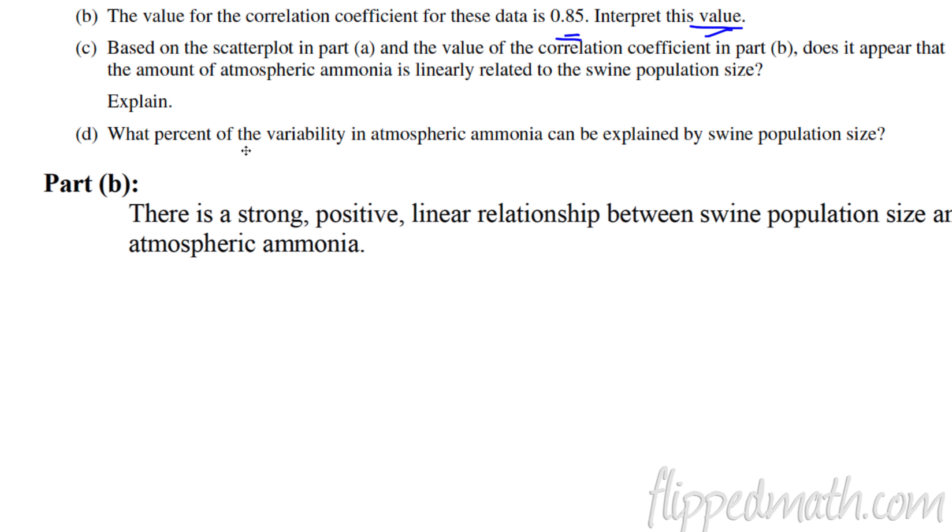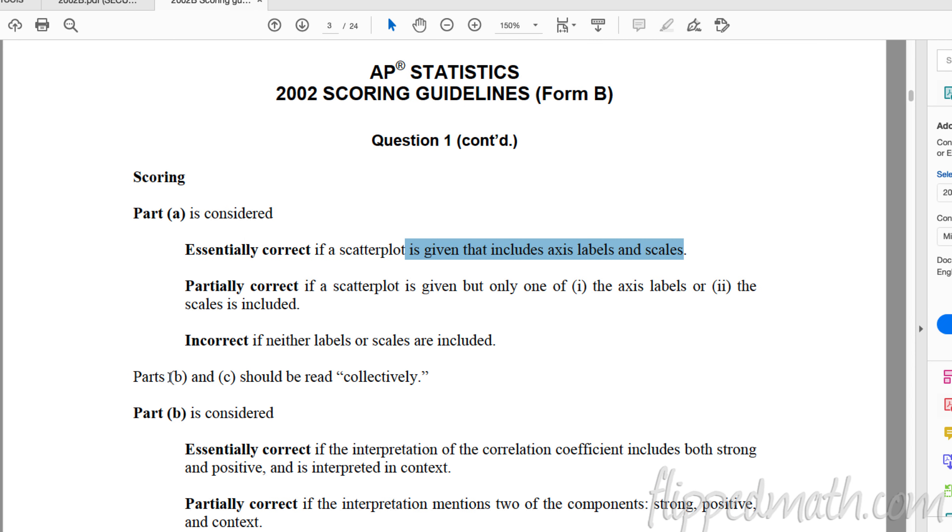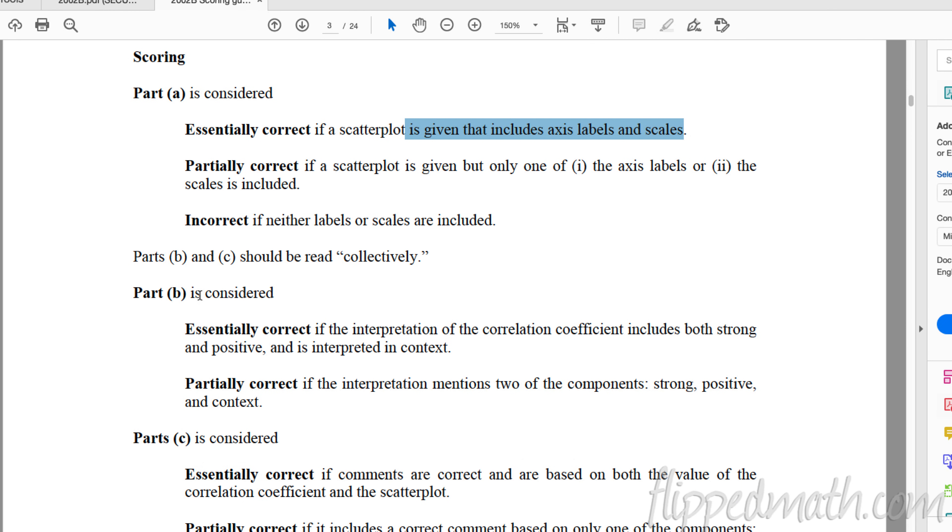Let's look at really quickly what you need to do to get full credit on your scatterplot. So this is the scoring guidelines for part A. It's essentially correct if a scatterplot is given that includes the axis labels and the scales. So if you don't include those, you don't get full credit. And those are easy things to include. So don't forget those. It's partially correct, means you'll get partial credit if it gives only one of those two things. So make sure that you are labeling both your axes and your scale, which are these numbers here and here.